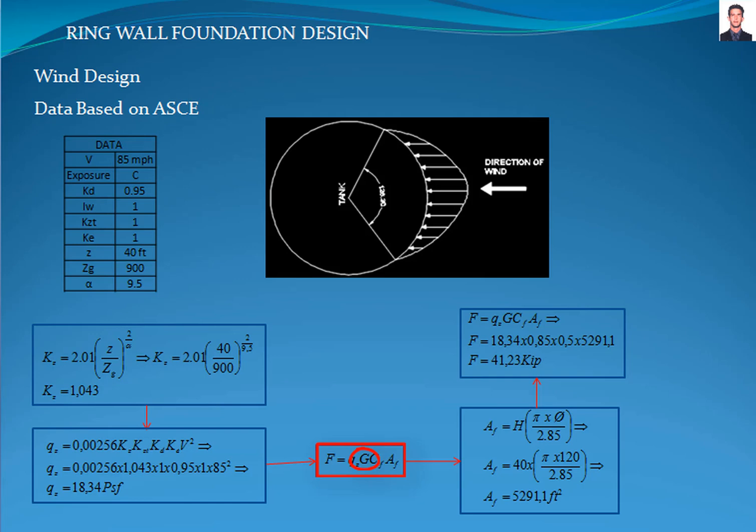A low rise structure is defined in section 26.2, where it has to meet these considerations: the average roof height is less than 60 feet and the average roof height doesn't exceed the least horizontal dimensions. The tank meets the requirements.